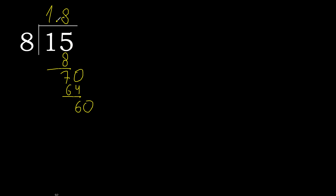The decimal point is placed here. 68 multiplied by 7 is not greater — subtract. Complete: bring down 40.